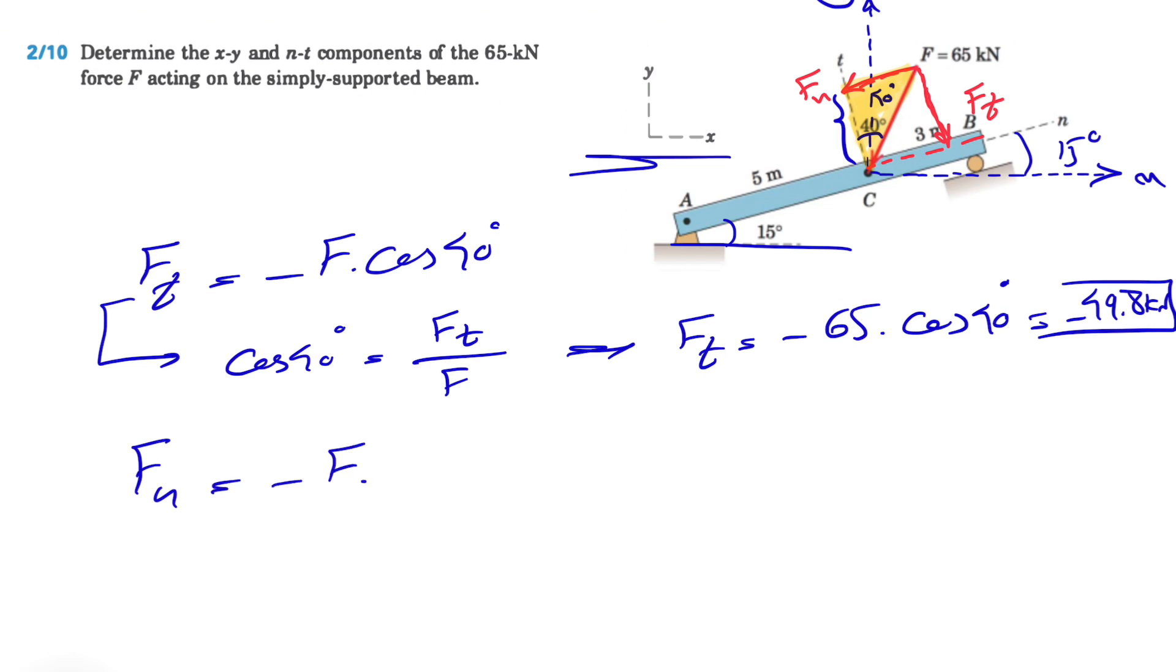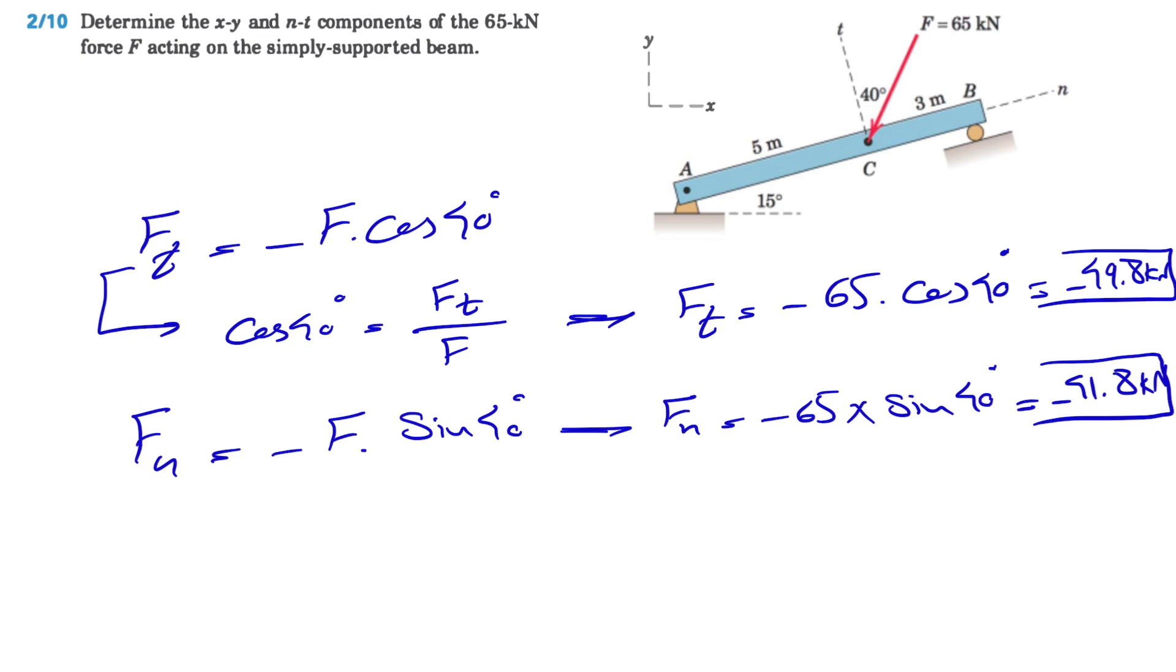If we want to find the n component Fn, we will have again a negative F times, this time we'll have sine of 40 degrees. Here our Fn will be minus 65 times sine of 40 degrees and that would be minus 41.8 kilonewton. So that was our n-t components.